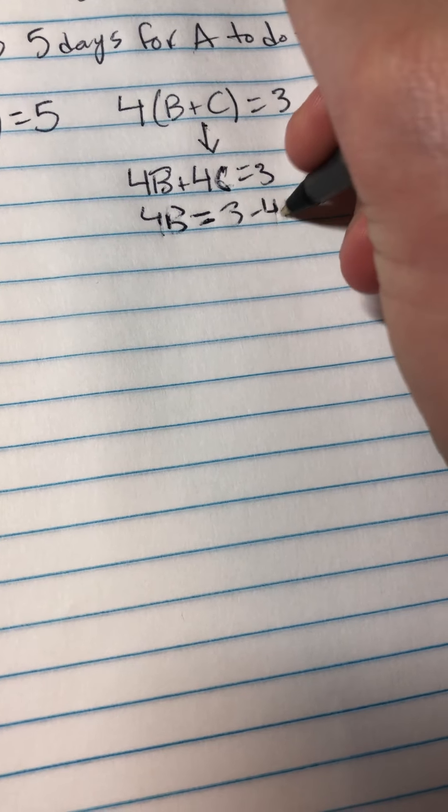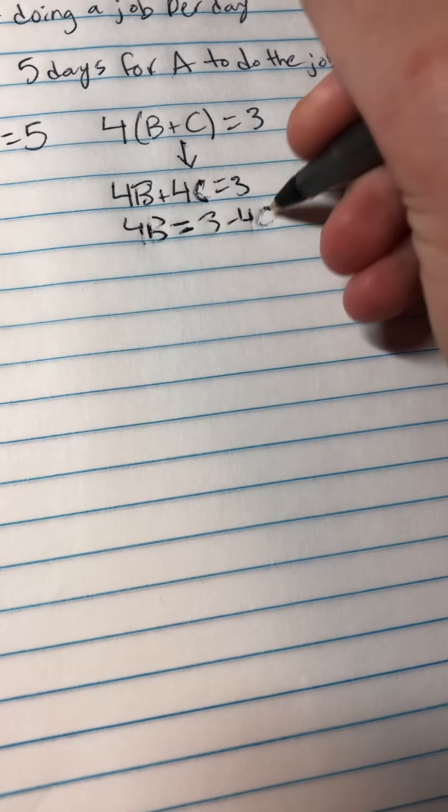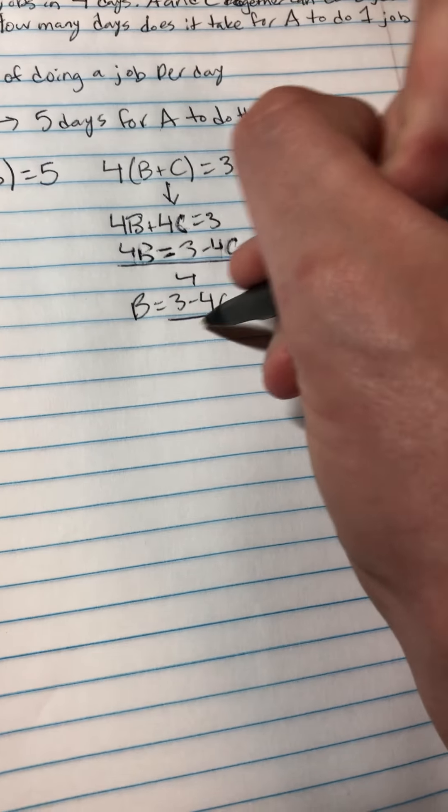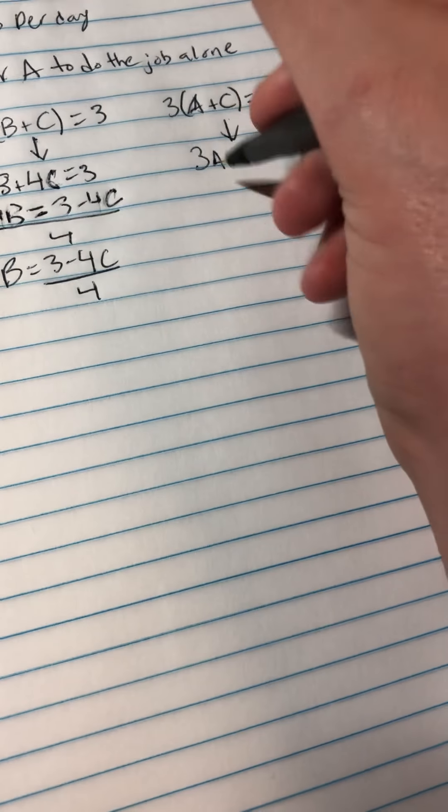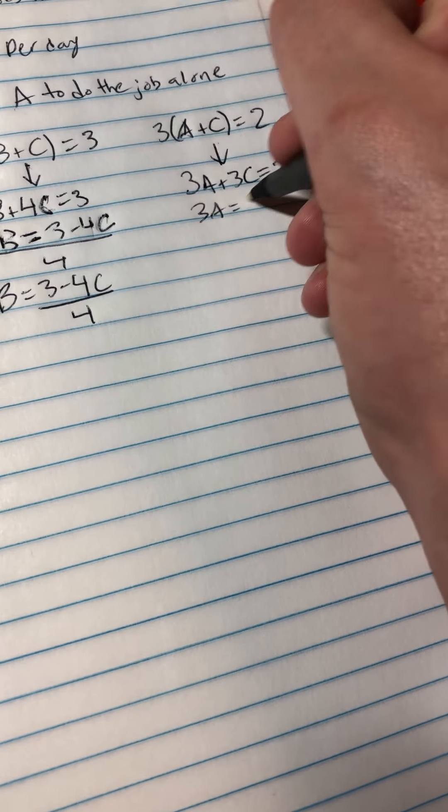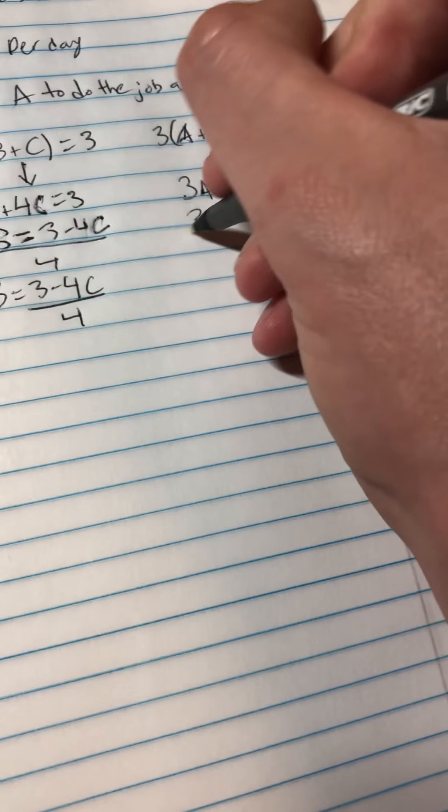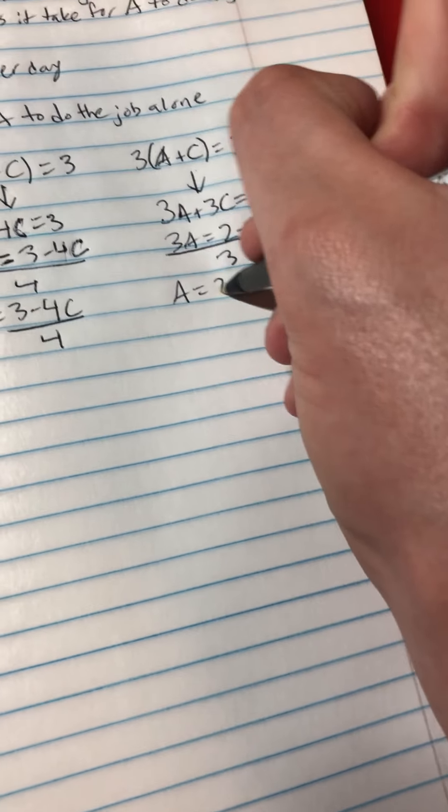So I'm going to get B equals 3 minus 4C over 4. Now I'm going to solve for A here. So I'm going to get 3A plus 3C equals 2. 3A equals 2 minus 3C divided by 3. A equals 2 minus 3C over 3.